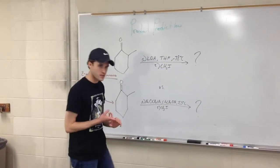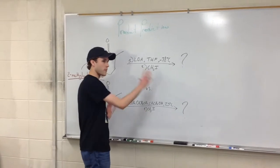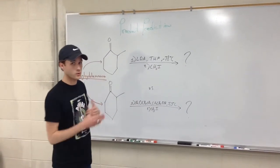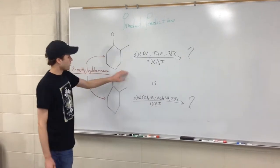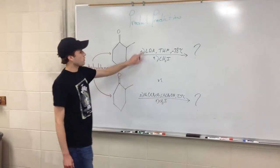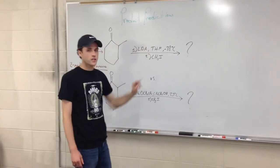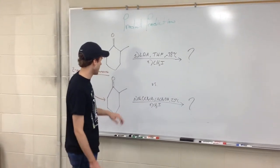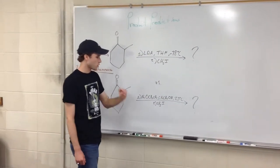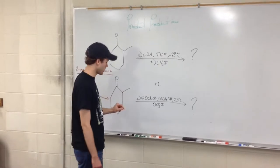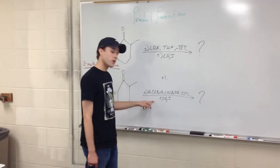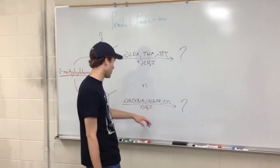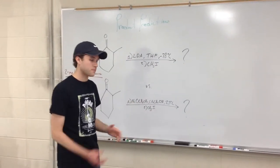We use two things to do this: some basic rules and then we'll look at the mechanism behind that. So if you didn't know the rules, you can look at the mechanism. The first reaction uses LDA in THF at negative 78 centigrade with methyl iodide. In the second reaction, our first set of reagents is sodium ethoxide in ethanol at 25 centigrade with methyl iodide.